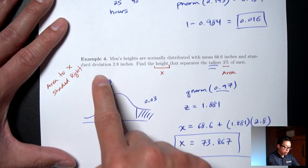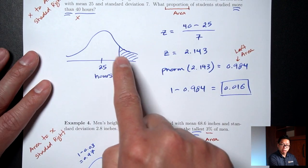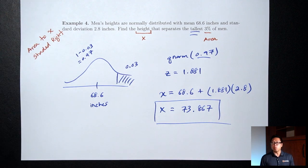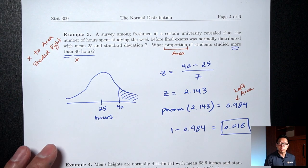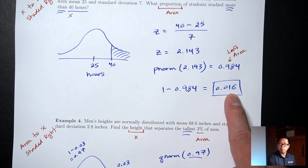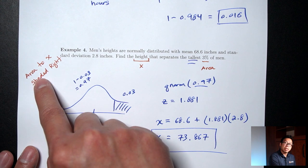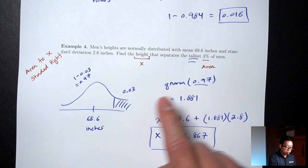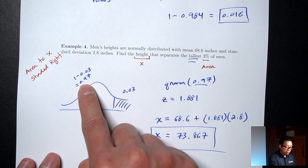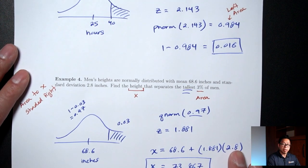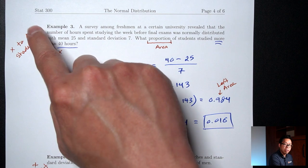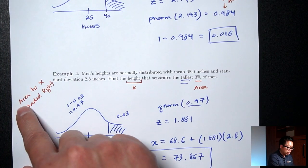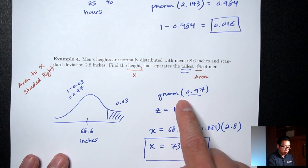Notice that in both examples 3 and 4, the pictures were shaded to the right. Anytime your picture is shaded to the right, you will have to do a 1-minus at some point, and you do it on the area. For an x-to-area question, the area is at the end — so do the 1-minus at the very end before the final answer. For an area-to-x question, the area is at the beginning — do the 1-minus right before plugging into qnorm.